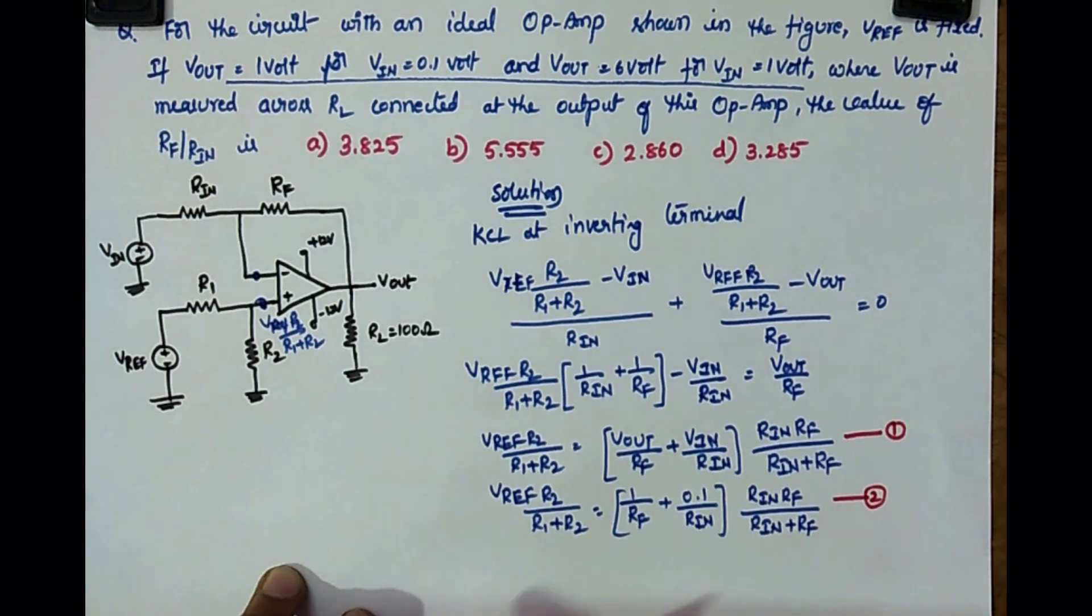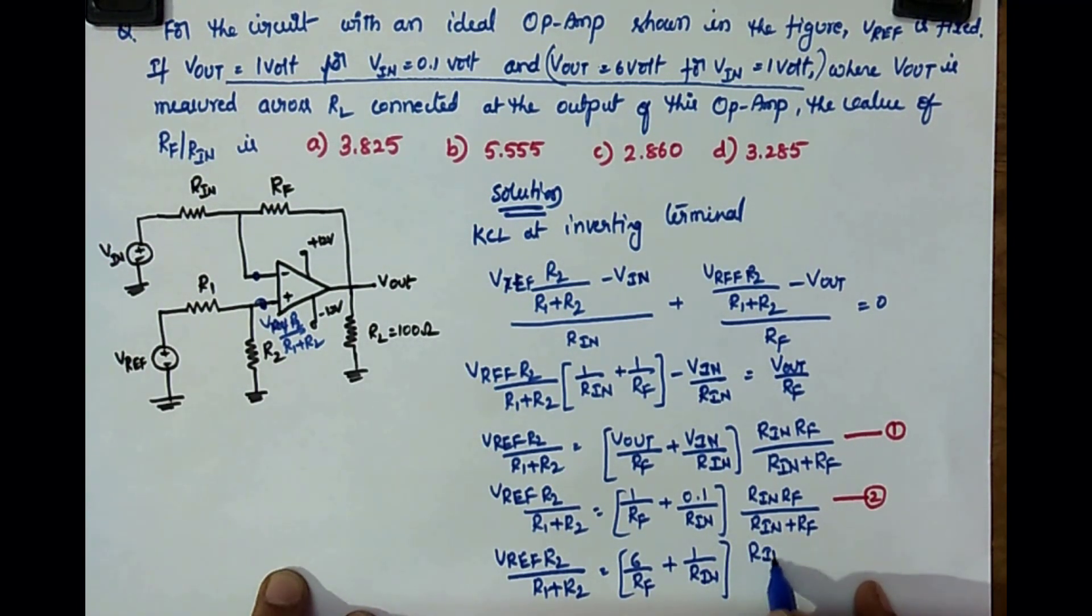Then for the second condition, that is for this condition, you write the same equation number 1, then that will be V reference into R2 by R1 plus R2 is equal to, yes, what is Vout for the second case, 6 by Rf and Vin is 1 volt, so 1 by Rn into Rn Rf by Rn plus Rf. Let me equation number 3.